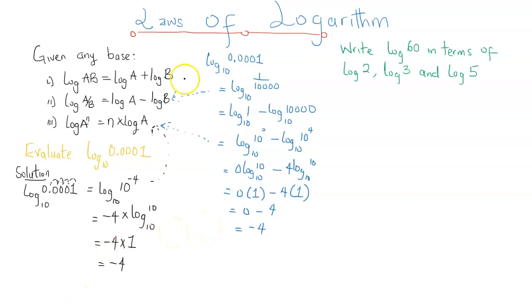Let's take one more. Write log 60 in terms of log 2, log 3, and log 5. We are going to be relying on one very elementary concept in mathematics. That's the expression of a number in terms of the product of its prime factors.